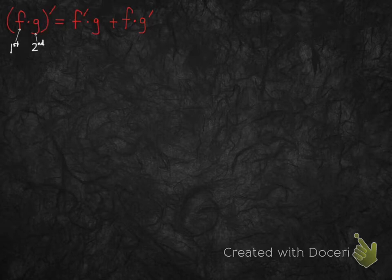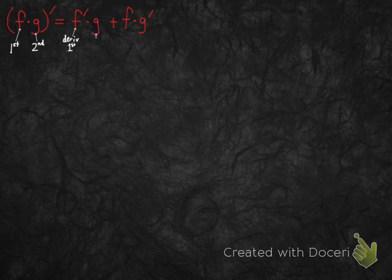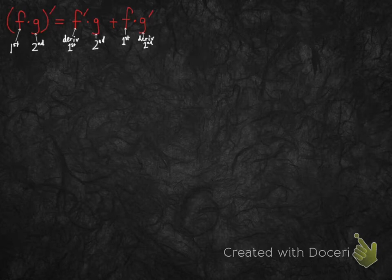If you call the functions f and g that are being multiplied together — let's call f the first function and g the second function — here's what the product rule tells you to do: derivative of the first times the second, plus the first times the derivative of the second. Notice where the primes are — you never take the prime of f and the prime of g together. It's f prime times g plus f times g prime.